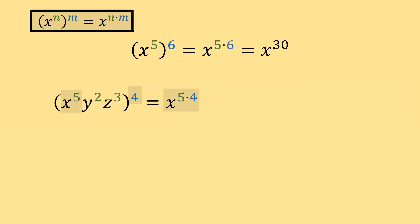In other words, we get x raised to the five times four times y raised to the two times four times z raised to the three times four, and that's going to be equal to x raised to the twentieth times y raised to the eighth times z raised to the twelfth.